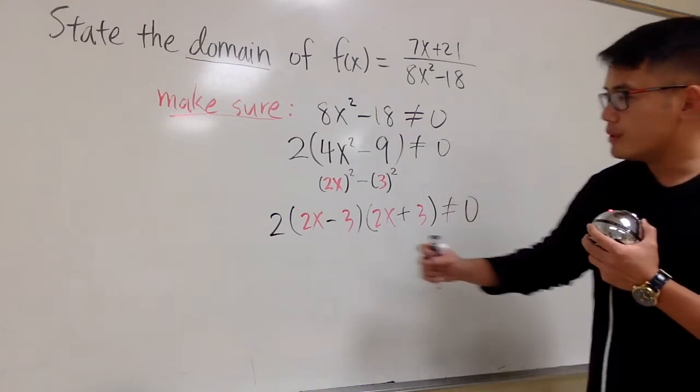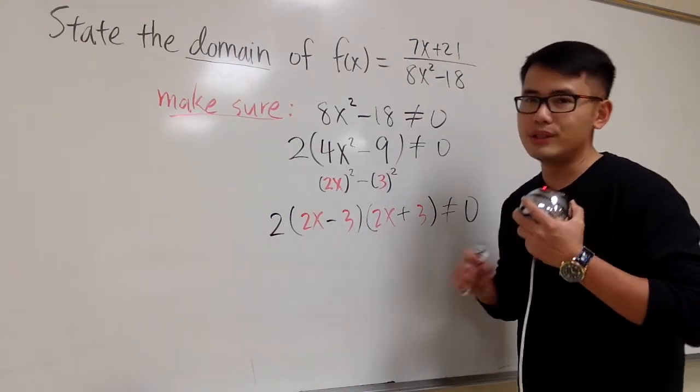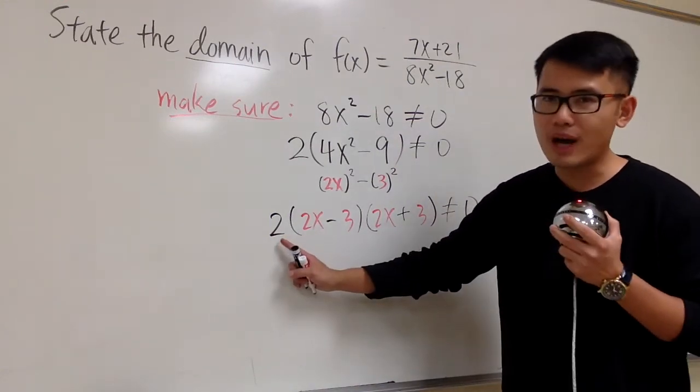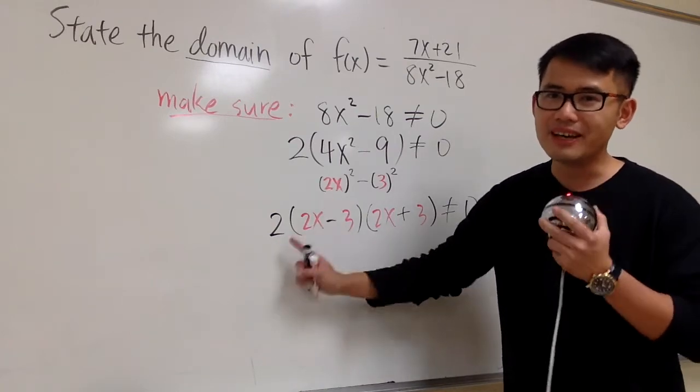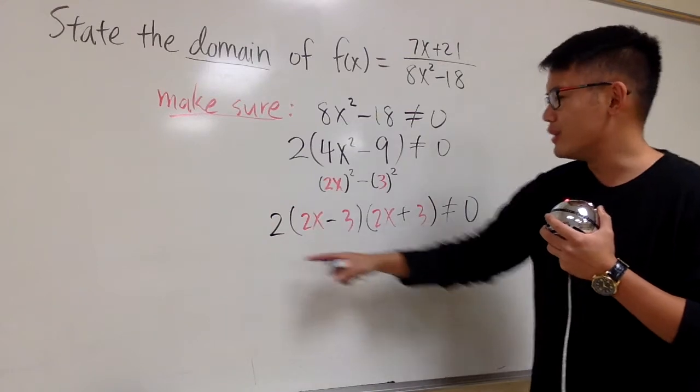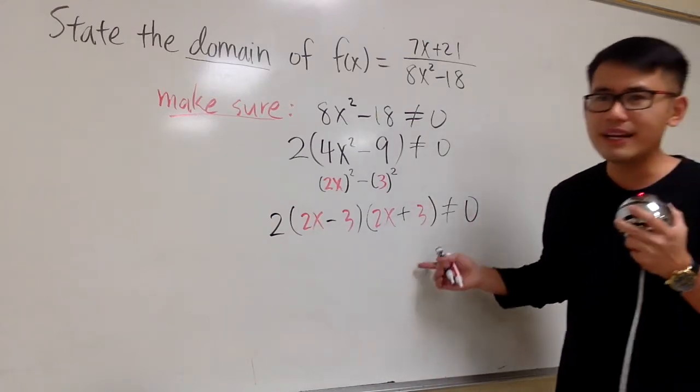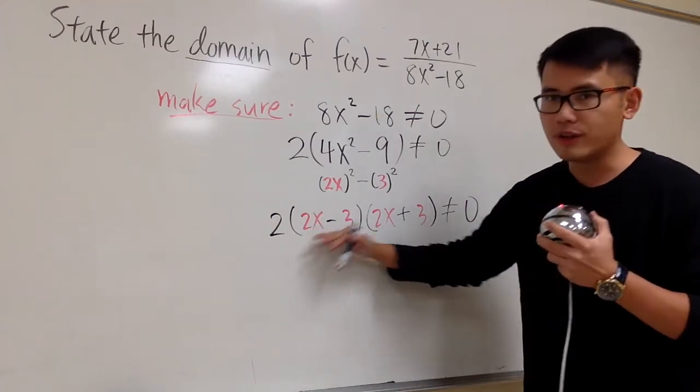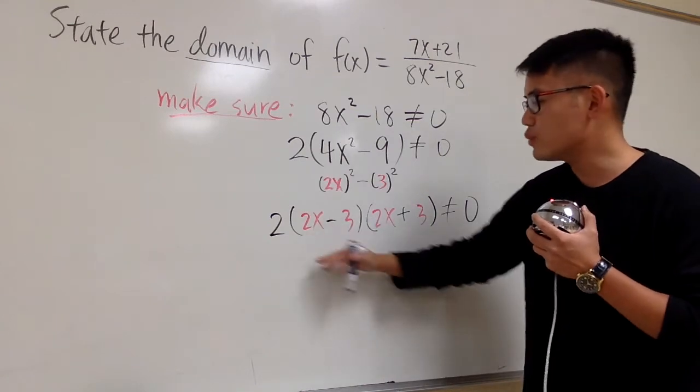At the end, technically, we have 1, 2, 3, 3 factors. But then, for the first one, it doesn't have an x. It doesn't matter. We don't have to work out this 2 at all. 2 is, of course, not equal to 0, right? Only pay attention to the factors that have the x, which is this one and that one.